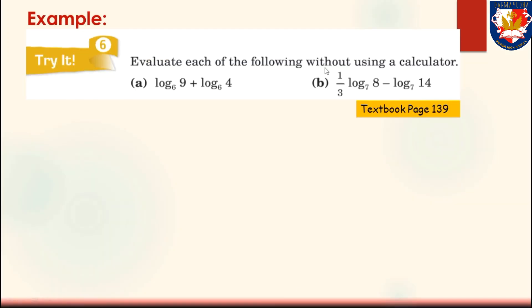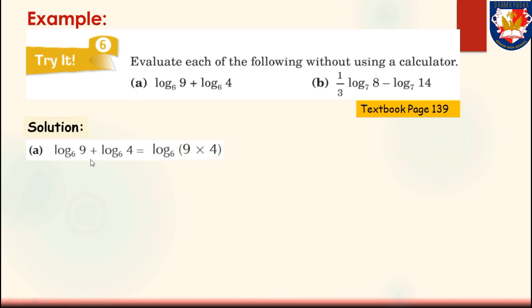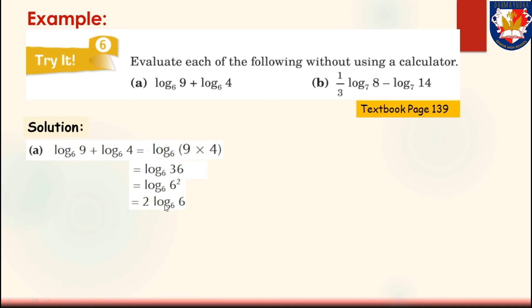Try 6: evaluate each of the following without using a calculator. Part A: logarithm of 9 to the base of 6 plus logarithm of 4 to the base of 6. Part B: one third times logarithm of 8 to the base of 7 minus logarithm of 14 to the base of 7. Solution for Part A: using the product law, this equals logarithm of 9 times 4 to the base of 6, which is logarithm of 36 to the base of 6. Since 36 equals 6 to the power of 2, using the power law gives 2 times logarithm of 6 to the base of 6, which equals 2 times 1, equals 2.